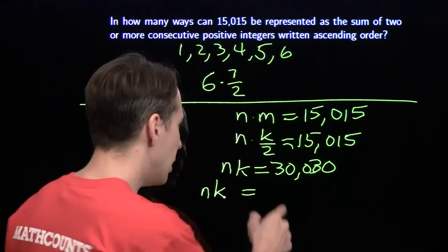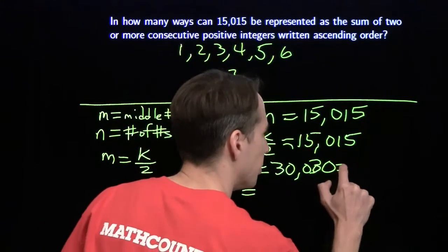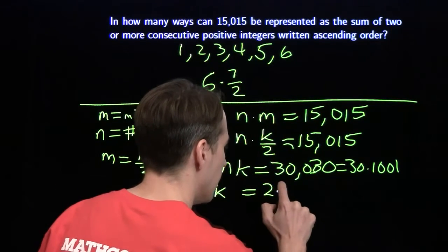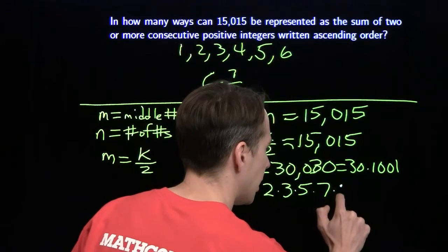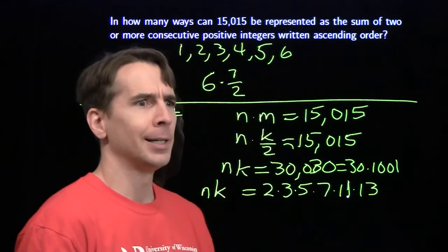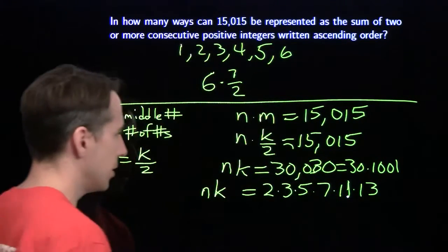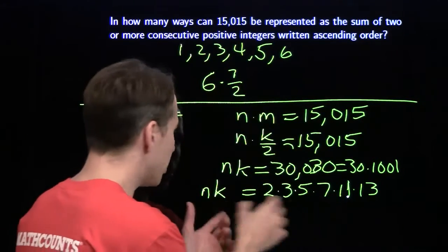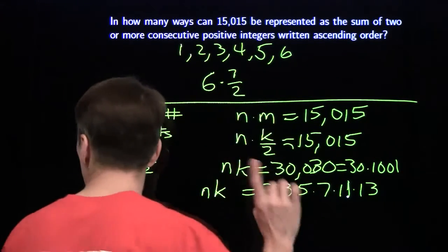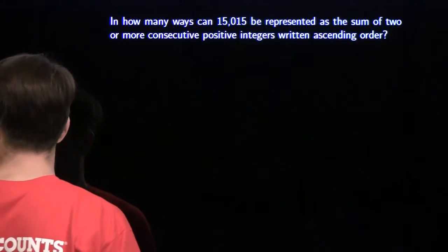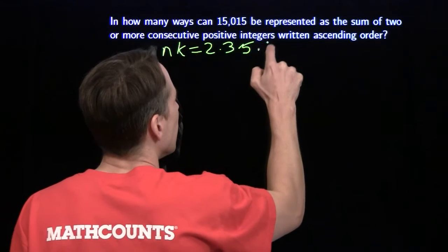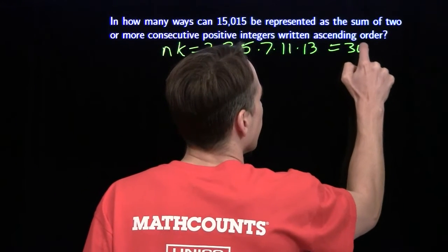We split 30,030 into 30 times 1,001. We know 30 is 2 times 3 times 5, and 1,001 is 7 times 11 times 13. So the prime factorization of 30,030 is 2 times 3 times 5 times 7 times 11 times 13. It looks like we can take some of these primes, put them in N and the rest in K, and we get valid values for N and K.